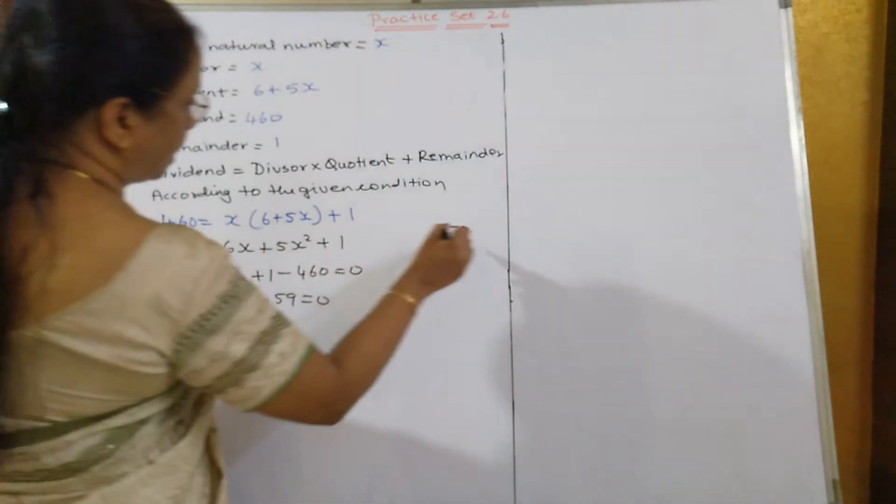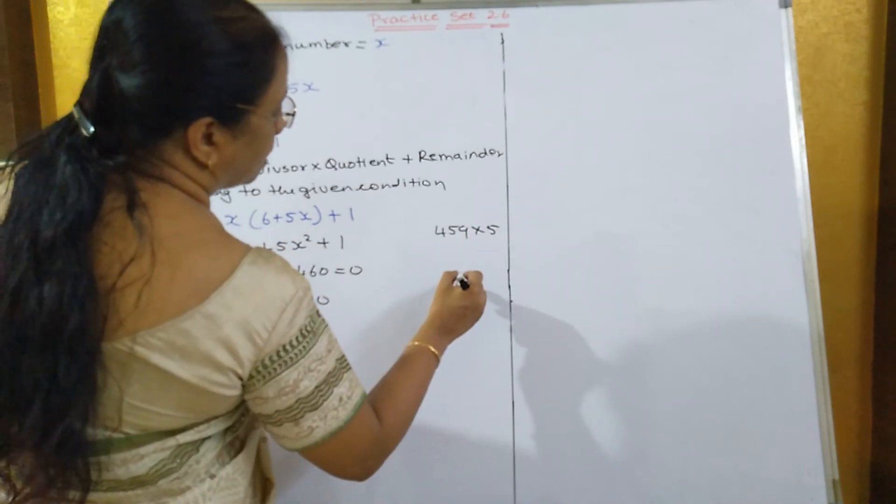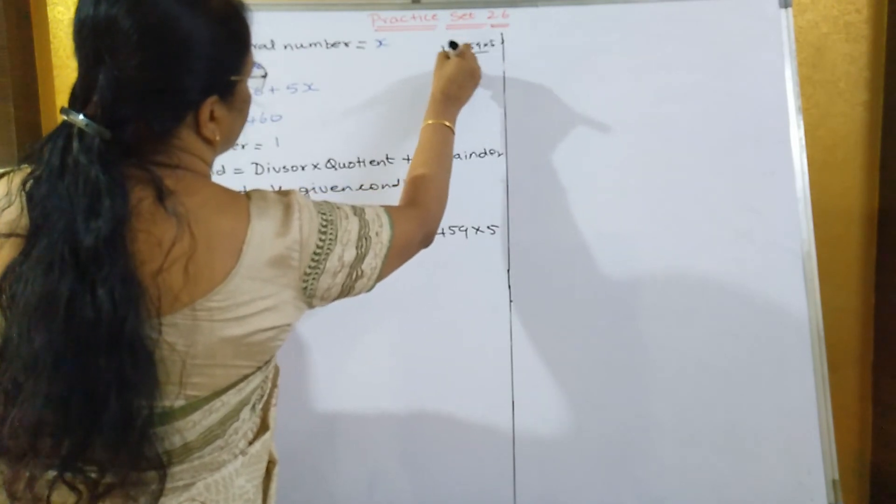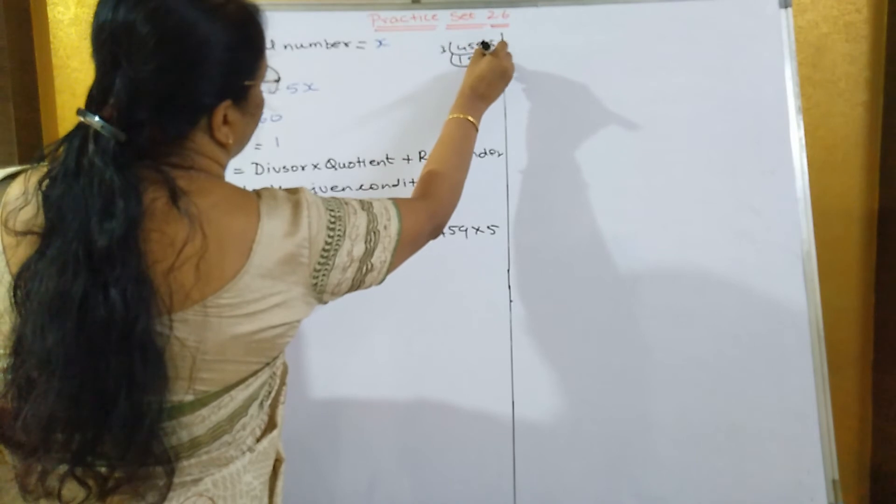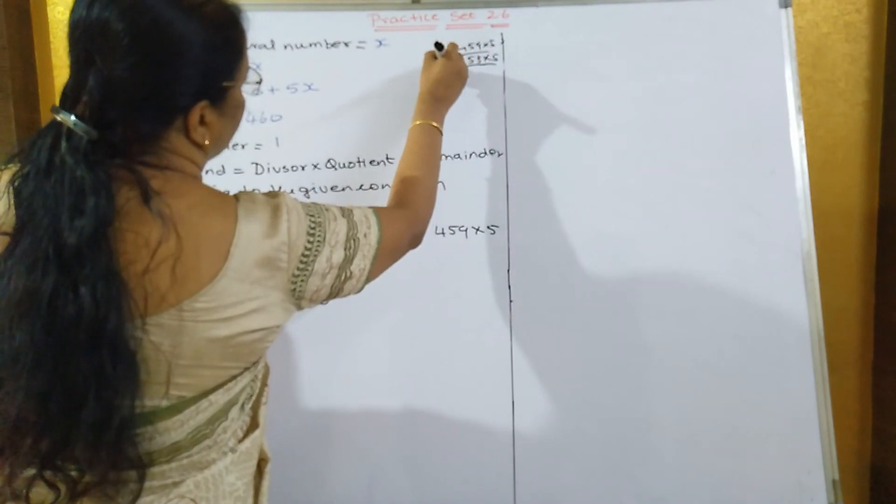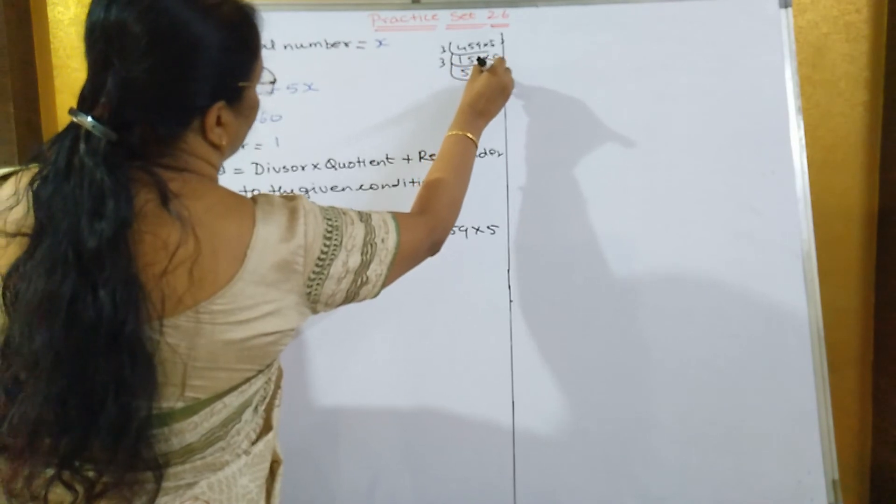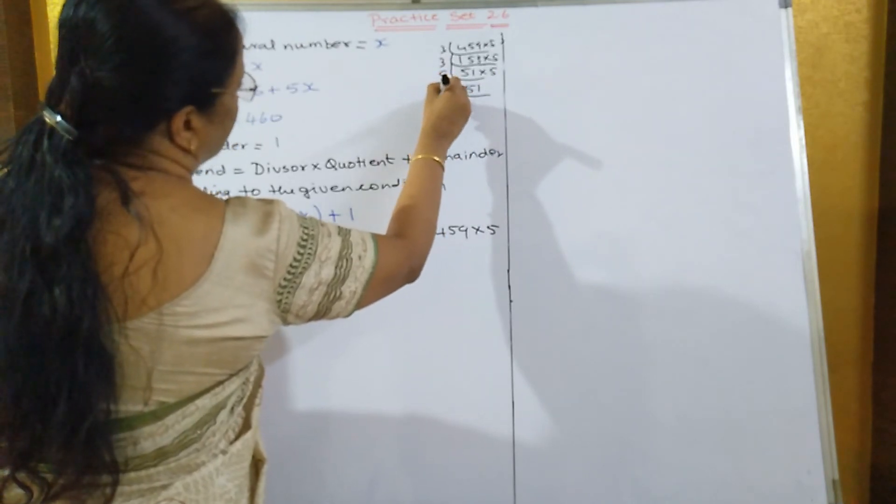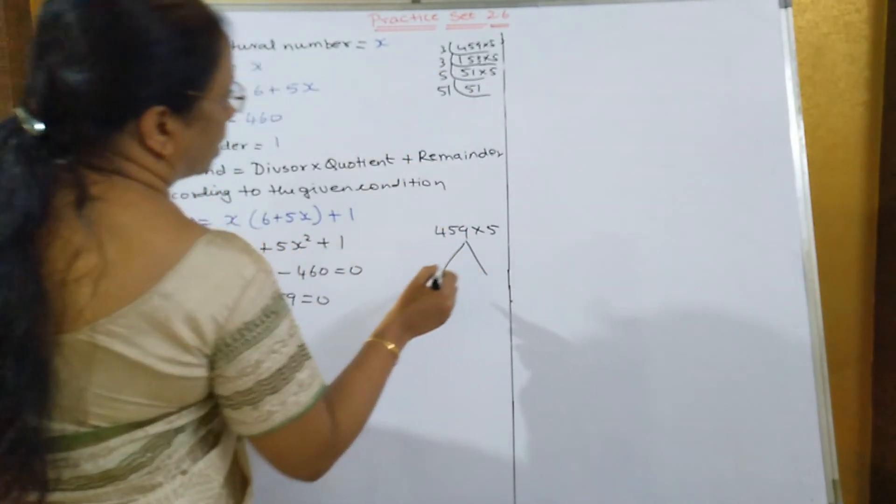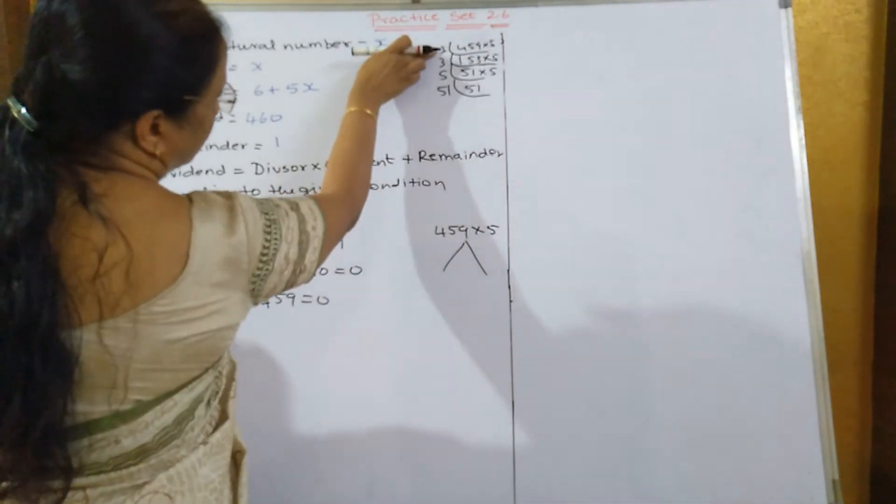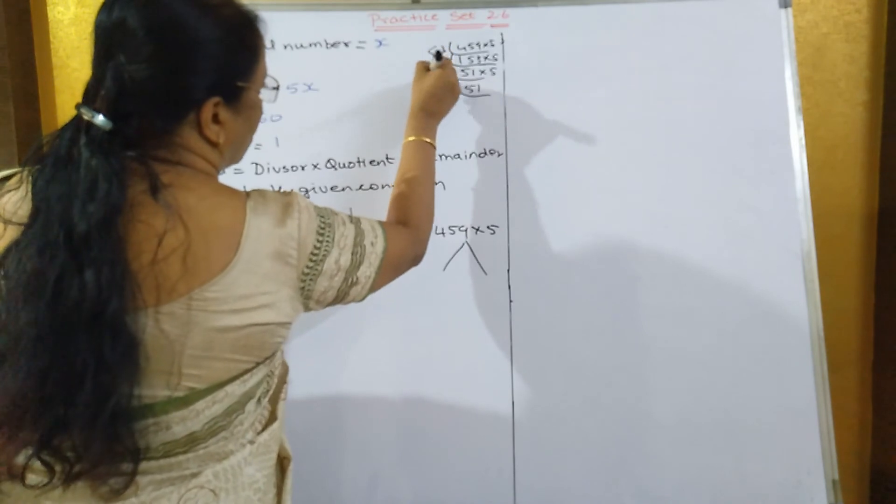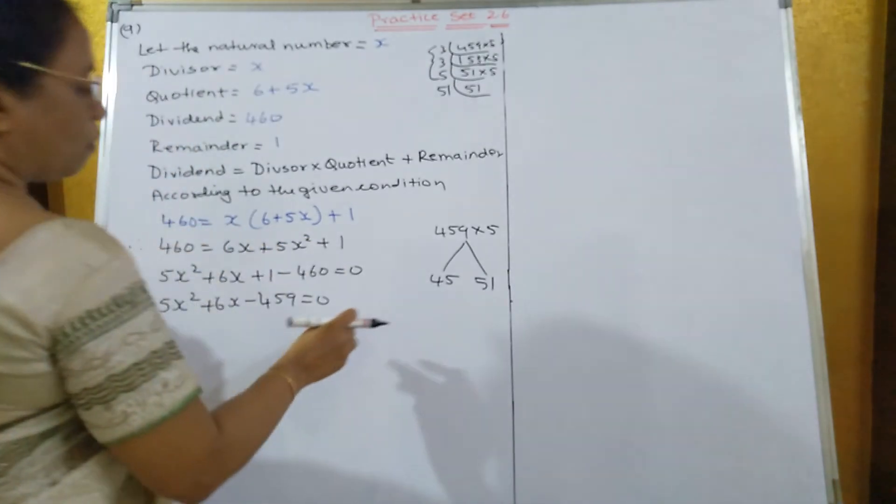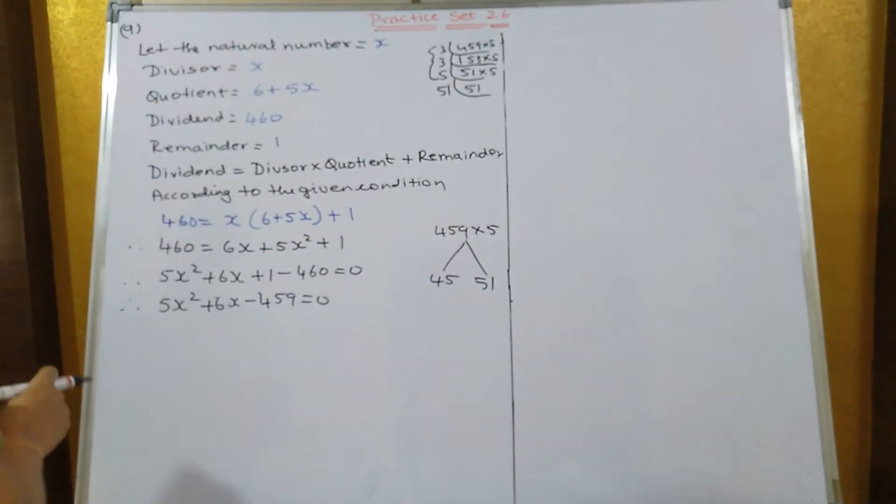Here it is 5, you will have to take that also. Since it is a bigger number, we will find out by prime factor method. 459 into 5, it goes in 3. Again, it will go in 3. 51 into 5, then 5 will go in 5. Now 51 is a prime number, it will remain like that. The breaking of 459 into 5 is 3, 3s are 9, 9, 5s are 45. All this together is equal to 45 and 51. 51 minus 45 is 6.